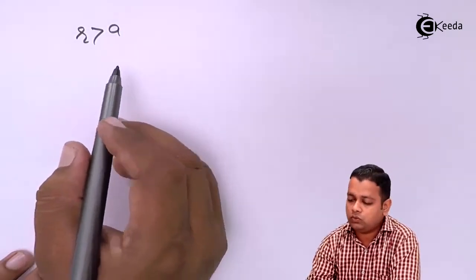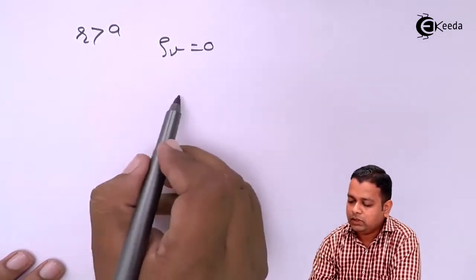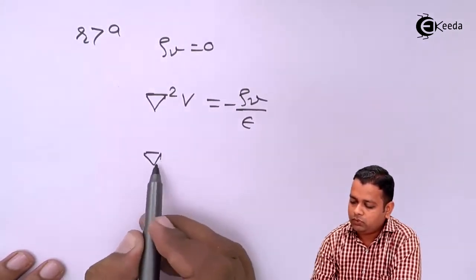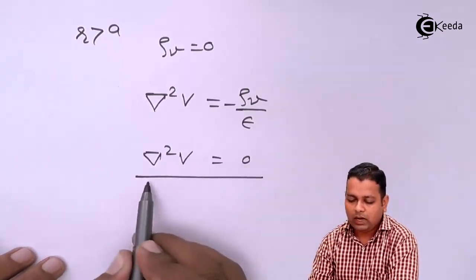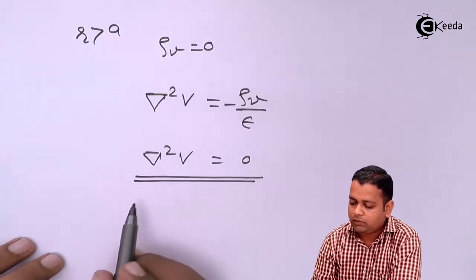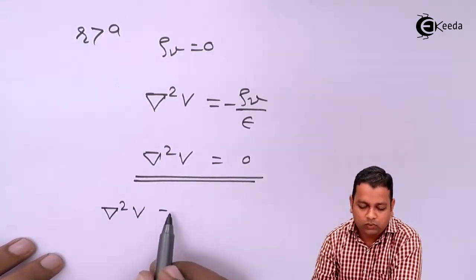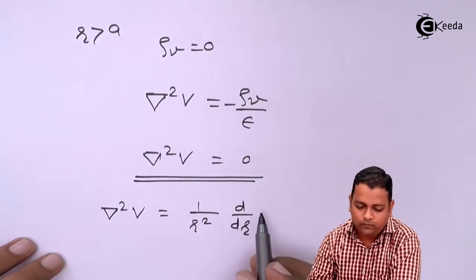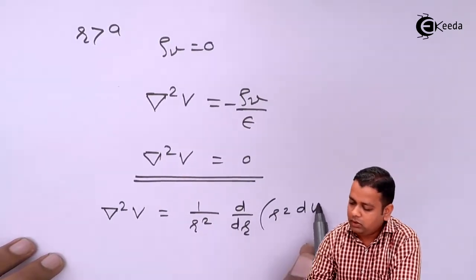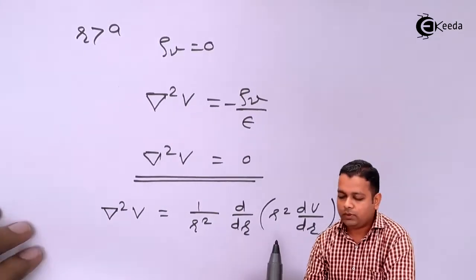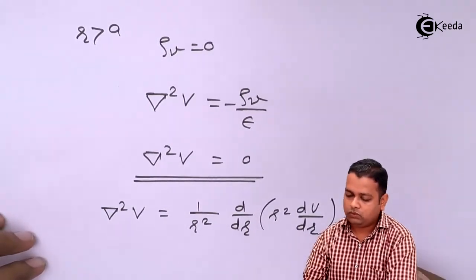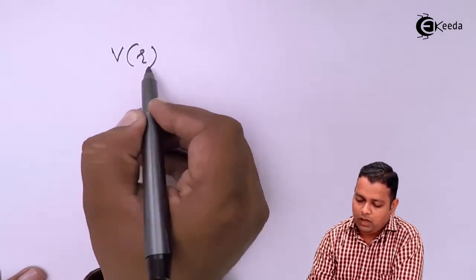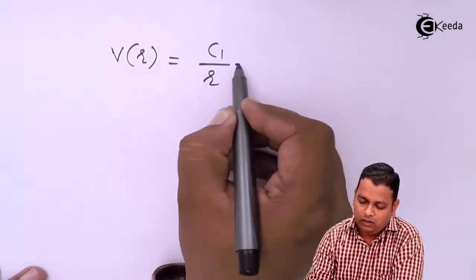For R greater than A, outside the sphere, we use Laplace's equation because there is no rho_V outside — rho_V equals zero. So we shift from Poisson's equation to del squared V equals 0. Expanding with respect to R only: 1 over R squared times d/dR of (R squared dV/dR) equals 0. Integrating twice, we obtain V(R) equals C1 over R plus C2, with two new constants C1 and C2.